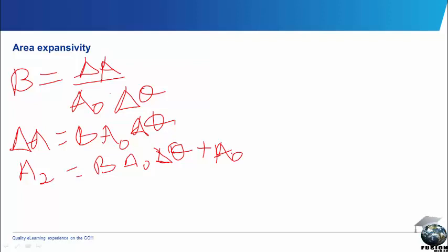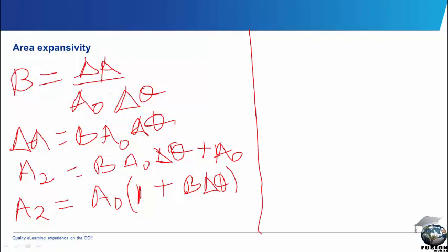Factorizing, we have a general formula. We say that A2 will be equal to A0 bracket 1 plus beta delta theta. But my dear, since area expansivity is interested in two parameters, we say that beta is equal to 2 alpha.